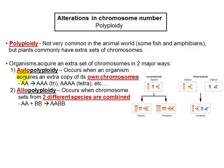If you have autopolyploidy, the prefix 'auto' means 'of the same.' So an autopolyploid organism inherits extra sets of chromosomes from the same species. When you're talking about allopolyploidy, that means you may have two different organisms getting together, with different chromosome sets originating from different sources.